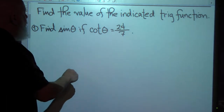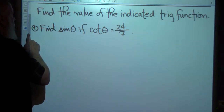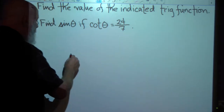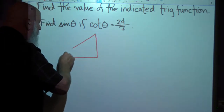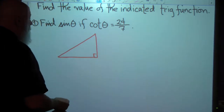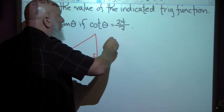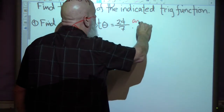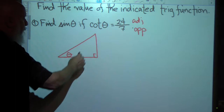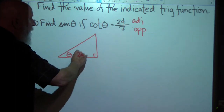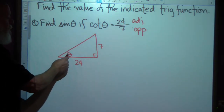Find the value of the indicated trig function. I want to find the value of a sine function if I'm given the value of a cotangent function. I'll show you how I do it — I just draw a little right triangle, I don't worry about scale. Put theta right there. The cotangent is defined as adjacent over opposite, so the adjacent would be 24.